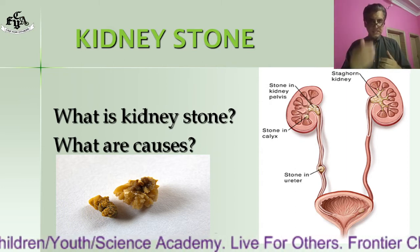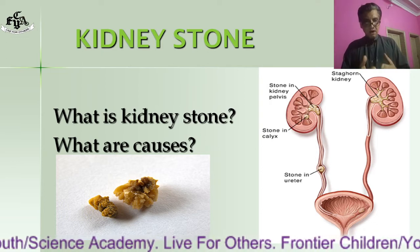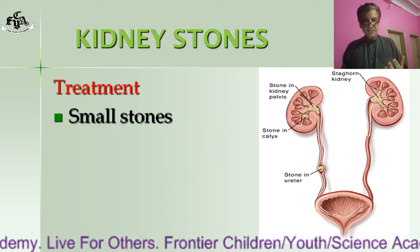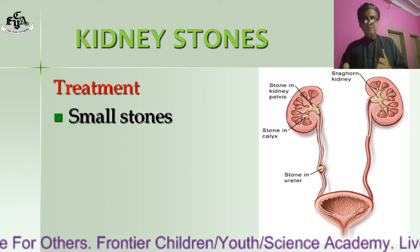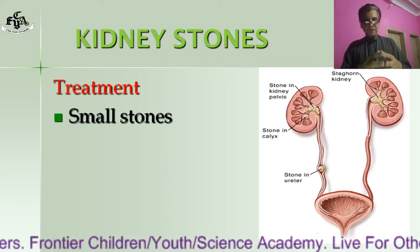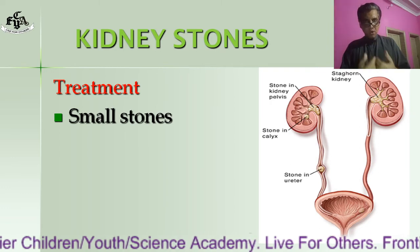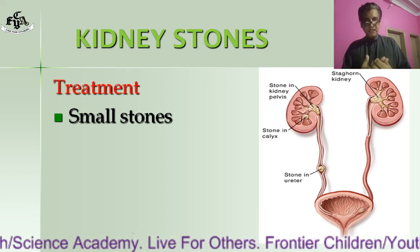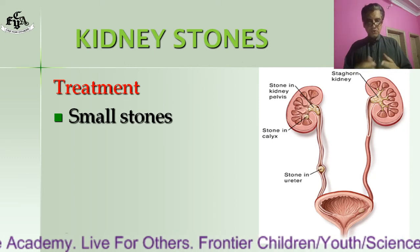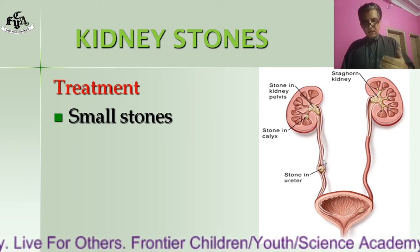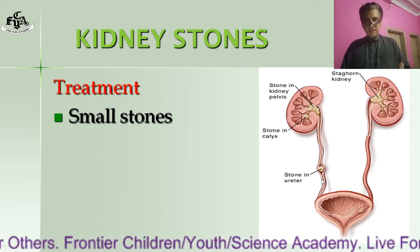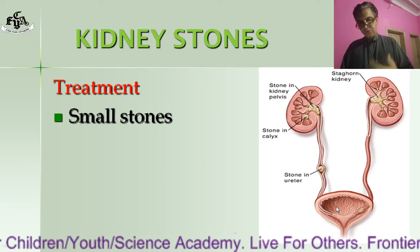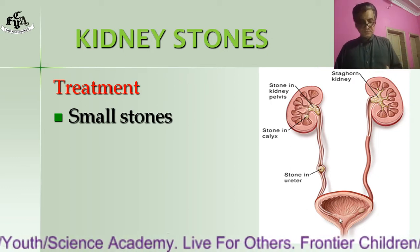Kidney stones are categorized on the basis of size — some are small and others are large. Small kidney stones can easily be removed through the pressure of water. You are advised to drink more and more water so that pressure is created in the form of urine and it will expel the kidney stone. The stone passes through the ureter into the urinary bladder and is finally drained out through the urethra.